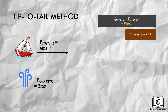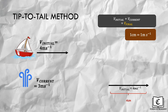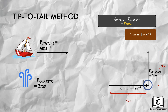Third, draw one of the velocity vectors — in this case, the initial velocity of the boat at 4 meters per second. This vector arrow should be 4 cm and pointing towards the right. Next, we draw the vector for the velocity of the current, which will be 3 cm long and pointing perpendicularly upwards. We combine them by having the tip of one vector at the tail of the other — hence the name tip-to-tail.